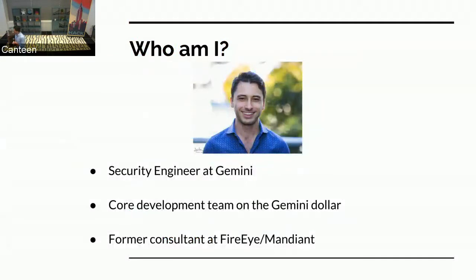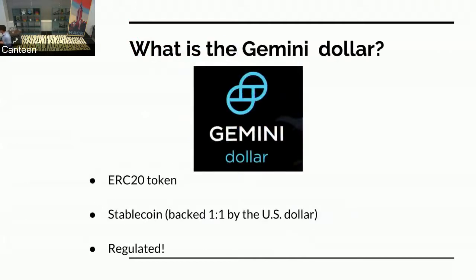I'm a security engineer at Gemini on the core development team of the Gemini dollar. I used to work at Mandiant right here in New York before that, doing pen testing, IR, and forensics. So what's the Gemini dollar? It's an ERC-20 token. It's a stablecoin, which means it's backed one-to-one by the US dollar, and it's regulated. All these different properties are very important in designing the Gemini dollar — it's all three of these things together.